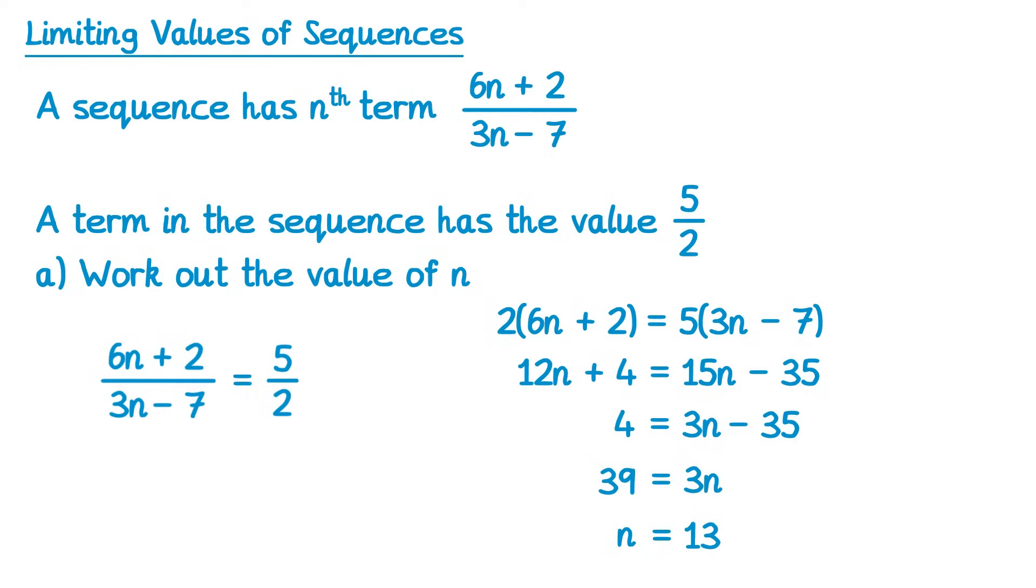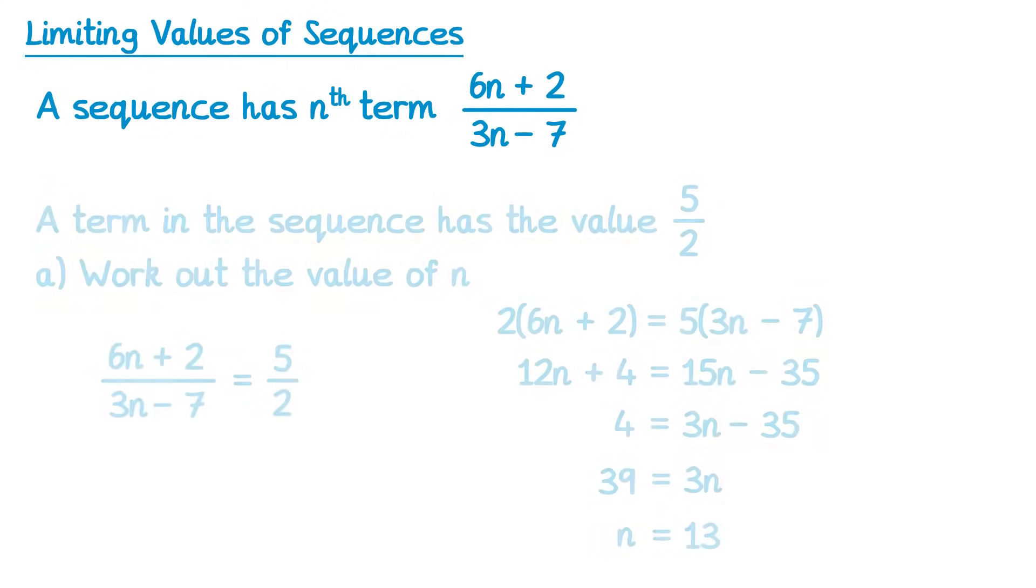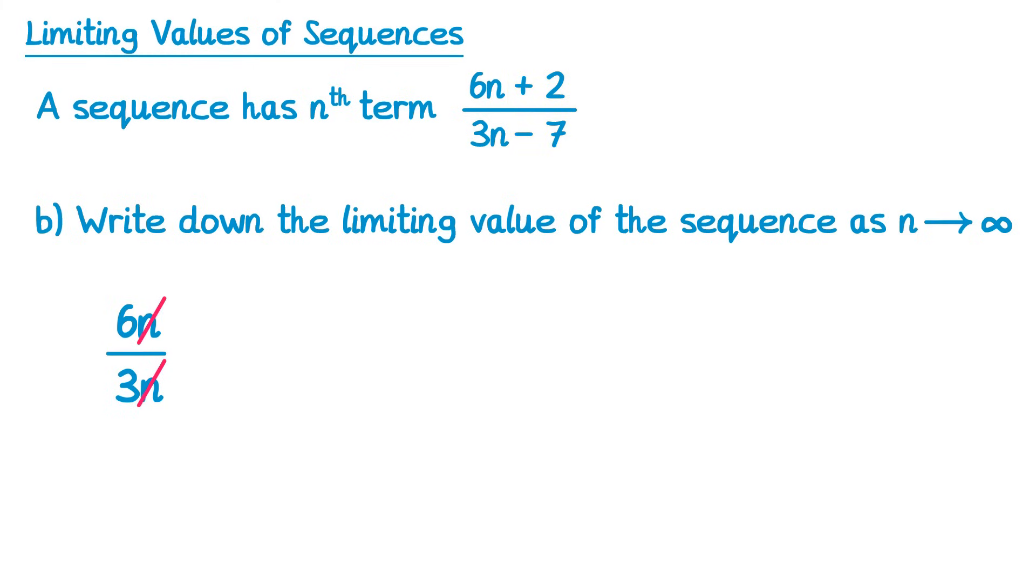So the value of n that gets 5 over 2 is 13; 5 over 2 is the 13th term. Now here we go, it's part b, write down the limiting value of the sequence as n tends towards infinity. So it's the plus 2 and negative 7 that will become less significant as n gets large, so we end up with 6n over 3n, we cancel out those n's, 6 divided by 3 is 2.